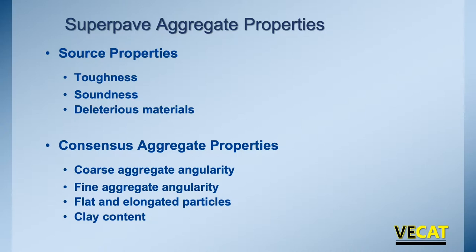At the advent of SuperPave, it was decided early on there are two points of view on the aggregate properties that are critical to asphalt mixture performance: source properties and consensus aggregate properties. From the source properties, the three properties predominantly discussed across the country would be toughness, soundness, and deleterious materials. The consensus aggregate properties — those determined through group agreement as critical to mix performance — would be coarse aggregate angularity, fine aggregate angularity, flat and elongated particles, and clay content.